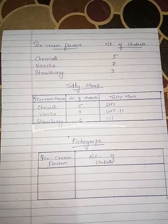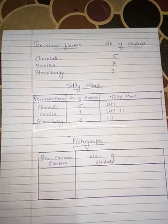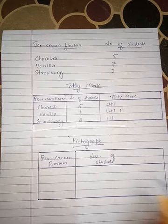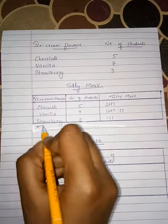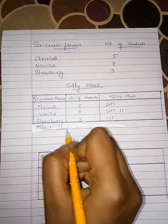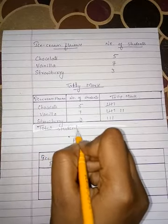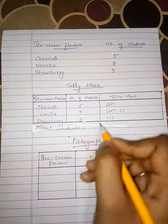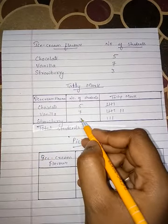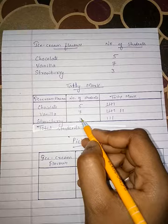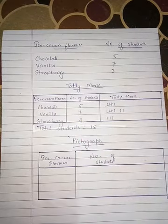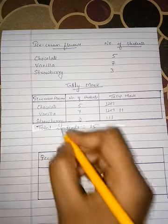How many students voted in all? The total number of students is equal to 7 plus 3 is 10, and 10 plus 5 is 15. Total number of students: 15.